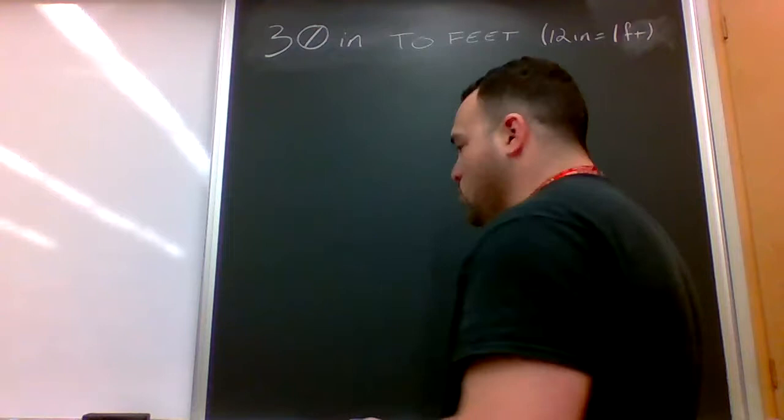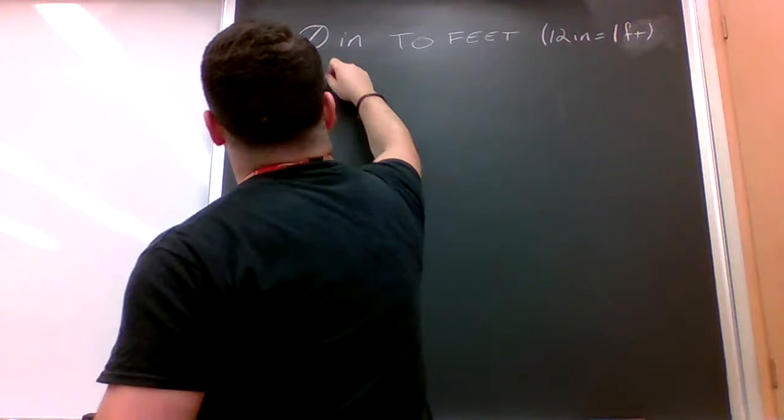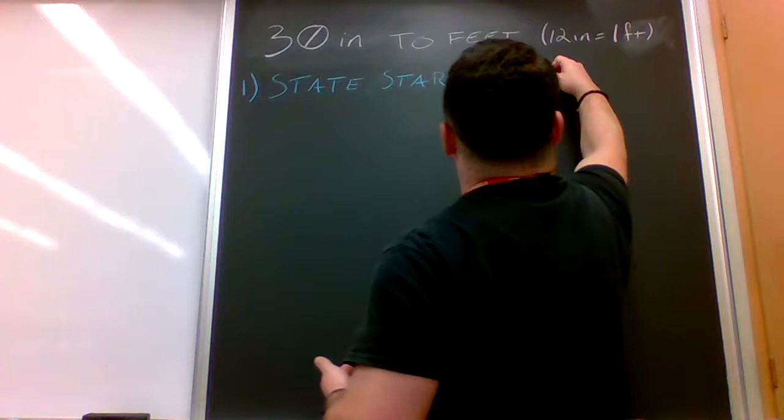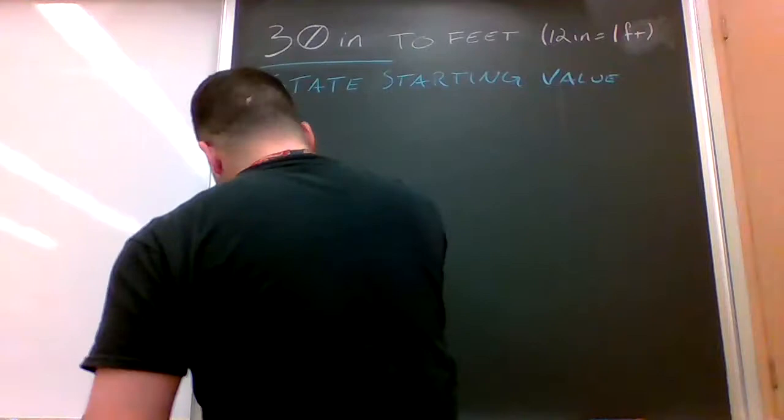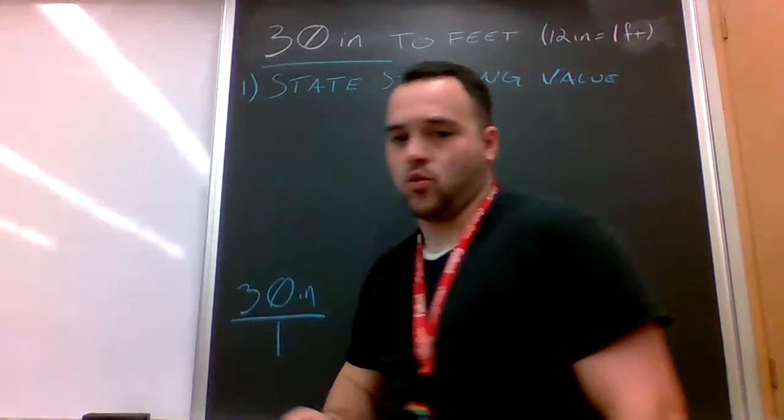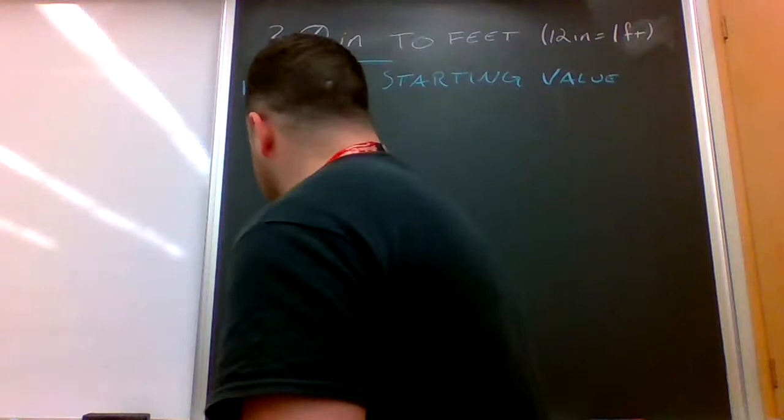So the first thing that we want to do is state our starting value, which in this case is going to be 30 inches. So down here where I'll do my work, I'm going to put 30 inches over 1. That one is just there to support the 30 inches and hold it up in place. Think of it like me or some other super strong person, with those muscles holding up a heavy weight.